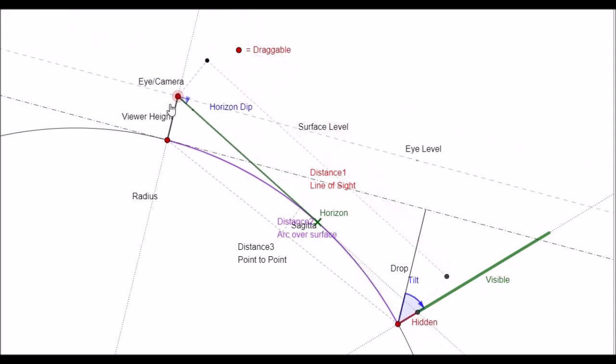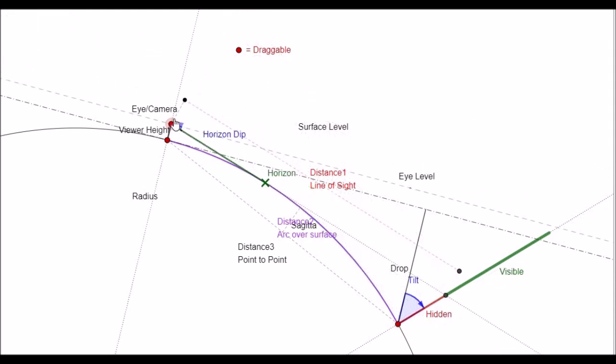Reducing the camera height to approximately five meters, and I'm just reducing an amount here to show in principle what happens on a spherical Earth. And the amount hidden increases by a significant amount, and possibly here we've got a third, maybe a quarter of the object is now hidden from view.